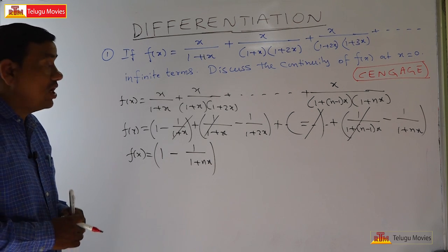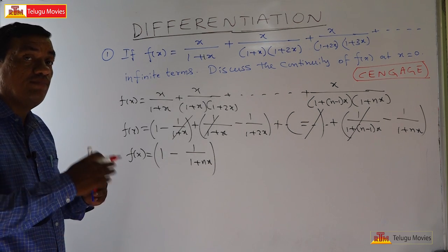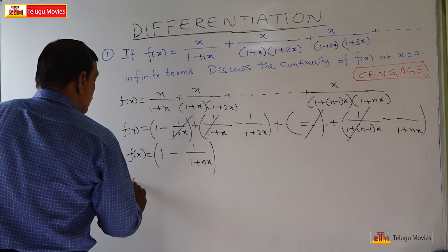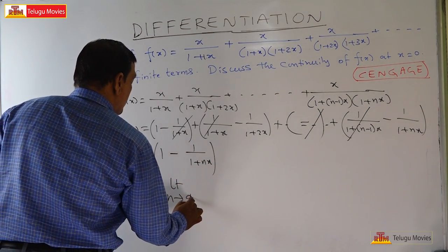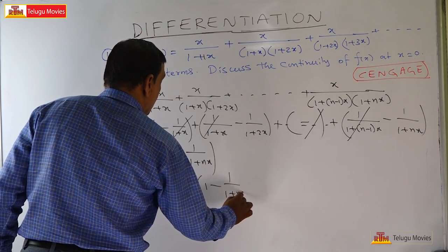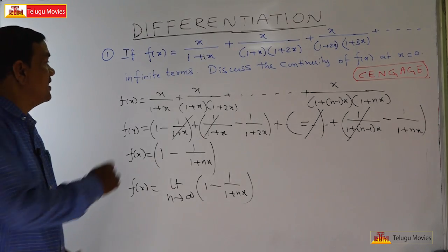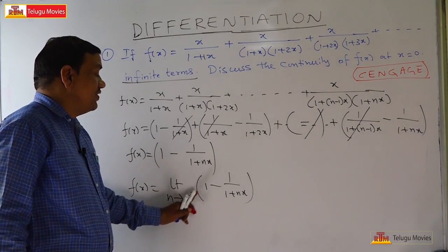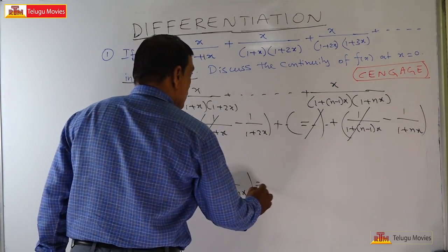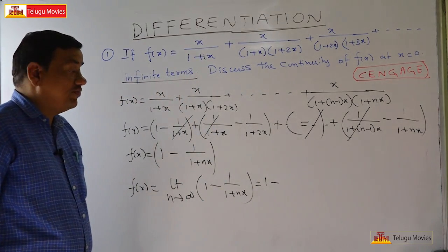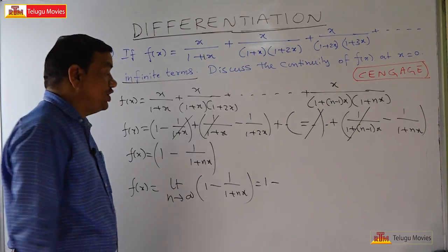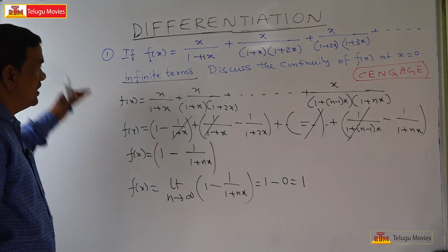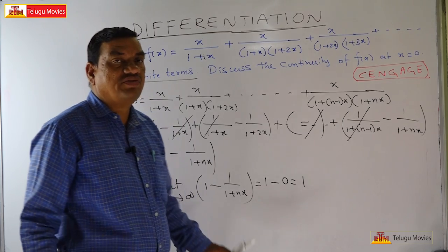To find the sum to infinite terms, we take the limit as n tends to infinity: f(x) = lim(n→∞) [1 - 1/(1+nx)]. As n tends to infinity, 1/(1+nx) tends to 0. Therefore 1 minus 0 equals 1. The series converges to 1 for x ≠ 0.